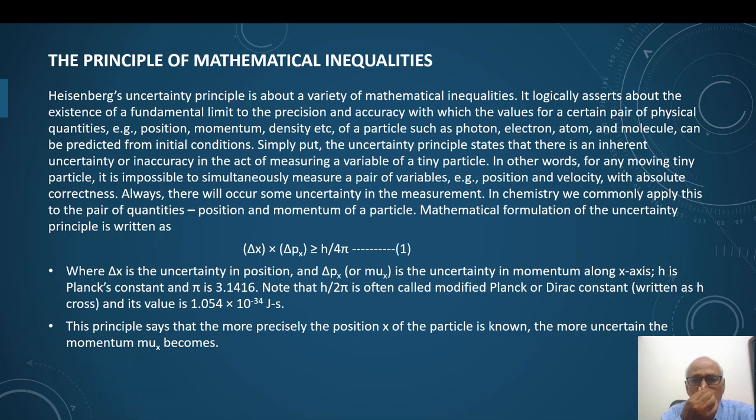Here one important point I must tell you. Earlier, instead of h upon 4π, it was h upon 2π which was used. Later, a correction was made. So h upon 2π which is very commonly used in calculations in quantum mechanics and algebra, etc. This is given a new name, modified Planck constant or Dirac constant. And it is written as ℏ and its value is 1.054 × 10^-34 joule second. The principle of uncertainty says that more precisely the position x of the particle is known, the more uncertain momentum μx becomes and vice versa.